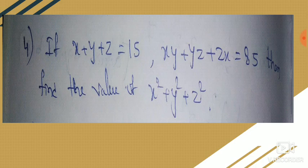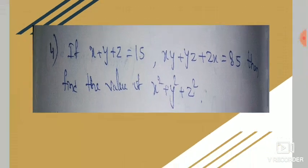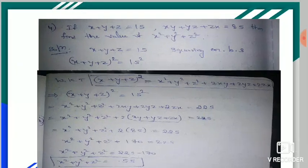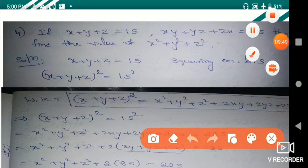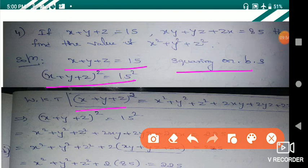First, note down the equation given: x + y + z is equal to 15. Squaring on both sides. Then applying the square formula: x + y + z whole square equals... I will write the formula here. Apply that formula, as I am showing you. Here, 15 squared equals 225.